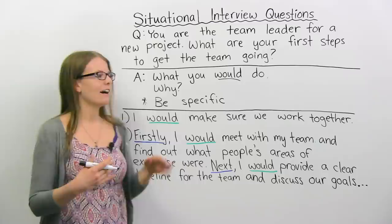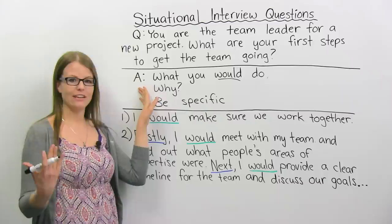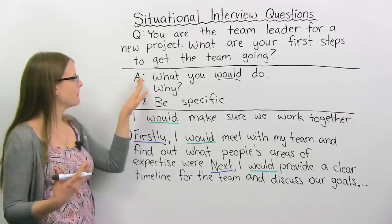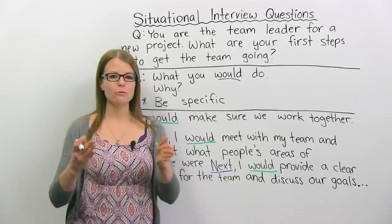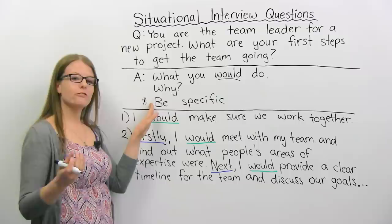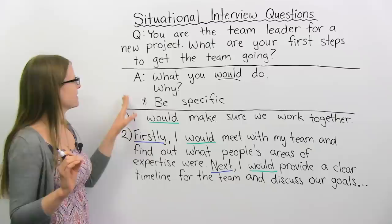So how do we answer a question like this? You have to say what you would do, and then you can also talk about why you would do it — give some reasons if you want. But the most important thing is to talk about what you would do. Don't talk about past experiences, and don't talk about what your friend Paul would do — talk about what you would do in this situation. And also very important: be specific.